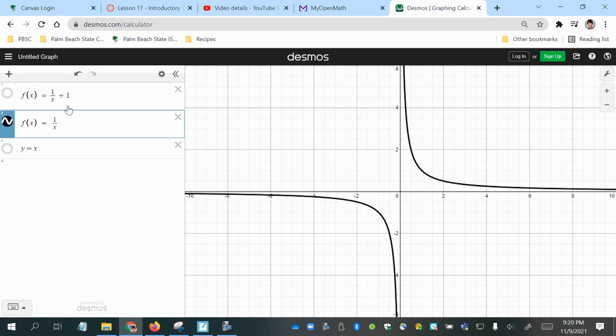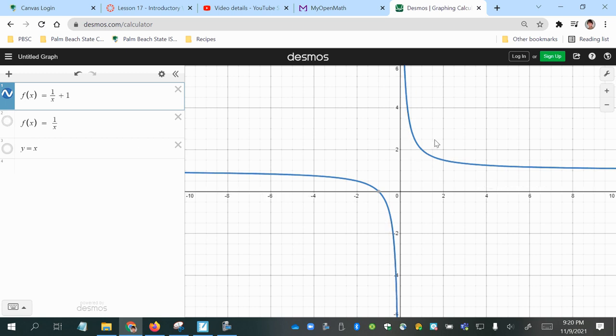And if we shifted it up one unit by adding one to the outside, then we would have this graph. And that is the graph that we were given, f of x.